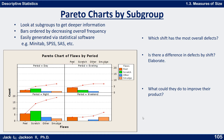If you look at this, you can reach further conclusions. The vertical scale is the actual count rather than a percentage. Which shift has the most overall defects? Is there a difference in defects by shift, and if so explain. And what could they do to improve their product? Press pause and analyze this.